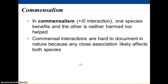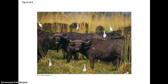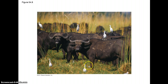Commensalism is an interaction you may not have heard about before. It's one where one species benefits and the other, as far as we can tell, does not benefit from the interaction at all. These water buffaloes in Africa have birds hanging around on them. The water buffaloes don't benefit from the presence of the birds, but the birds hang around because as the water buffalo walk through the grass, bugs are stirred up out of the grass.